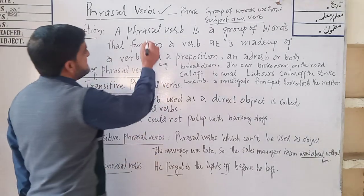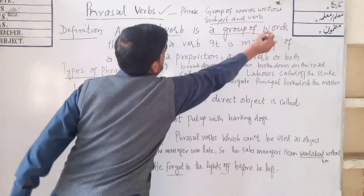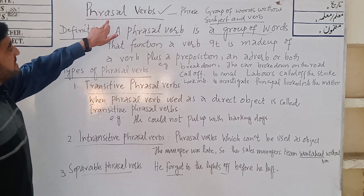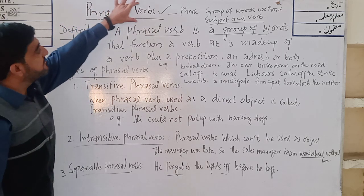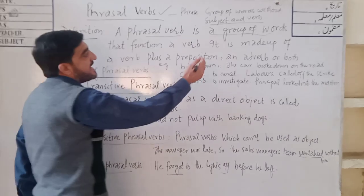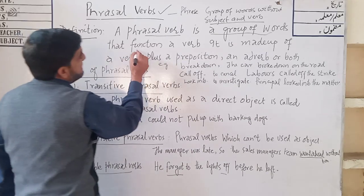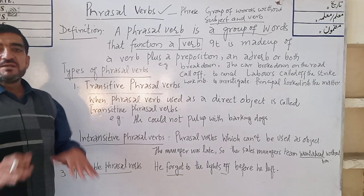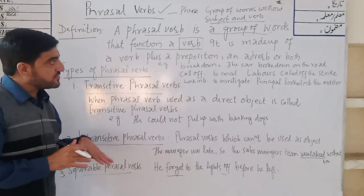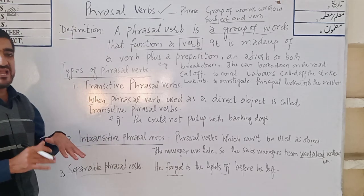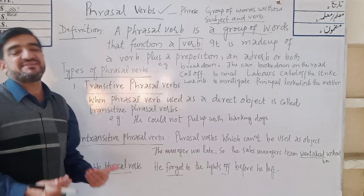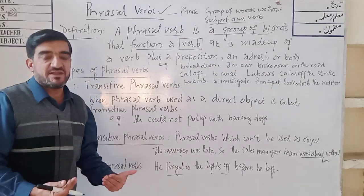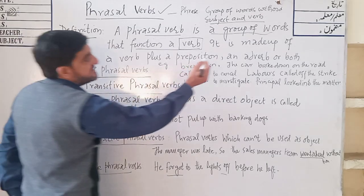So the definition of phrasal verb is that a phrasal verb is a group of words. If you look into the title it is called phrasal verbs, so it means that a phrasal verb is a group of words whose function is that of a verb. This part is very important — phrasal verbs are those words which play the role of a verb in a sentence, but that verb consists of more than one word.